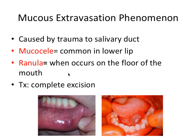Mucus extravasation phenomenon is probably the most important one that you need to know. It kind of tells you what it's all about — we're talking about mucus being extravasated or leaking out into tissue. It's caused by trauma to the salivary duct. Mucocele is probably the most prominent and most common form of mucus extravasation phenomenon.